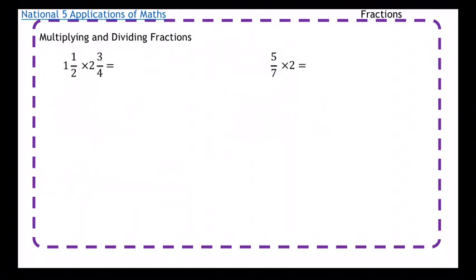If we've been given ones that have a mixed number, we're going to have to change that into a top-heavy fraction first. So I've got 1 and a half times 2 and 3 quarters, so I'm going to change both those numbers into top-heavy fractions first.